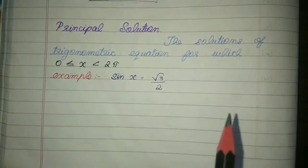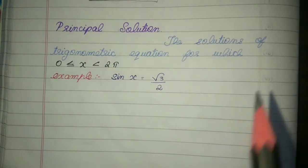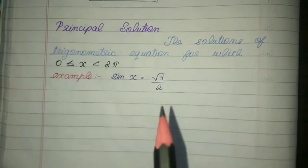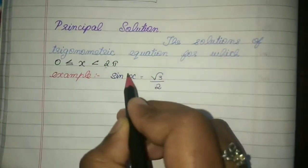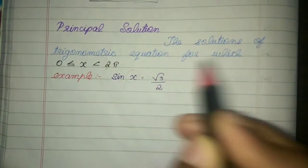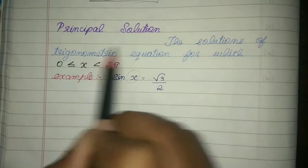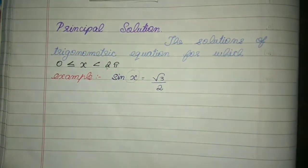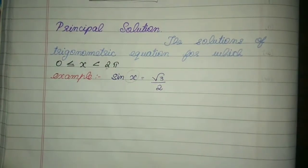Now let us learn an important topic: principal solution. A trigonometric equation is given and we have to find the value of x. The solution of a trigonometric equation for which 0 is less than or equal to x and x is less than 2 pi — we will check at what positions sine is root 3 by 2.